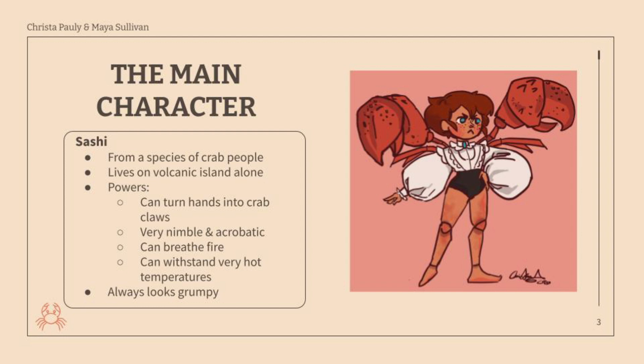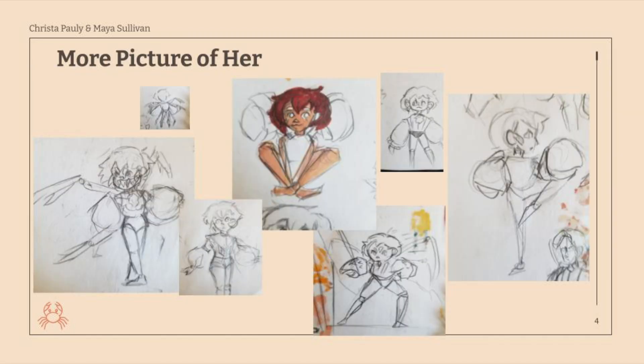This is my first drawing I did of her. Originally I had crab claws coming out of her back, but as you can see in the updated versions and in the animation, she can turn her hands into crab claws. She's very nimble and acrobatic, she can breathe fire, and she always looks really grumpy. These are a few more pictures I did of her — just little doodles from my sketchbook.